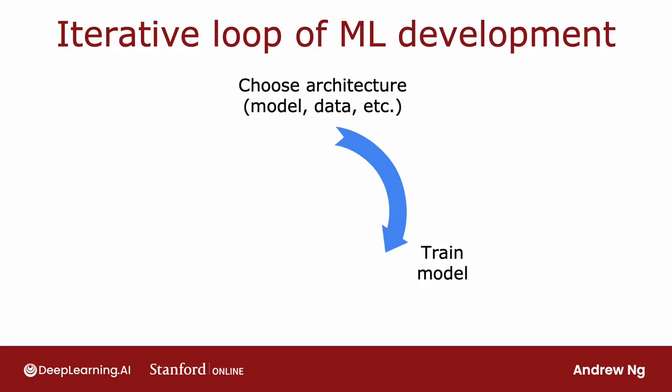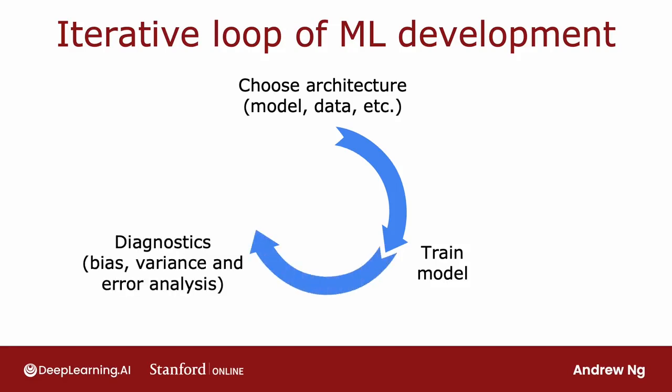As I've mentioned before, when you train a model for the first time, it will almost never work as well as you want it to. The next step that I recommend is to implement or to look at a few diagnostics, such as looking at the bias and variance of your algorithm, as well as something we'll see in the next video called error analysis.